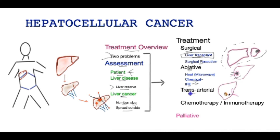What about trans-arterial treatment? In this treatment, access is gained to the artery supplying the tumor — as seen in this diagram — and this blood vessel is then interrupted by injecting small beads laden with chemotherapy molecules to destroy the tumor. As with other treatments, it has limitations in terms of the size of the tumor that can be treated.